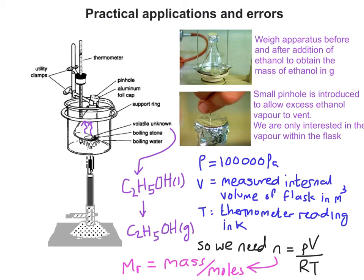Once we've worked out the number of moles, we can then work out the mass of the ethanol, which is obtained by weighing the apparatus before and after the addition of the ethanol. That gives us the mass. We can use PV equals nRT, or n equals PV over RT, to work out the moles.